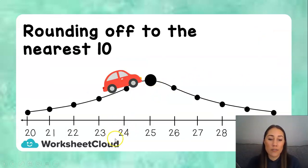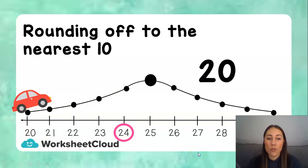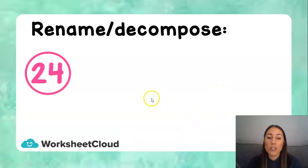Now, we're going to round 24 off to the nearest 10. So, remember my car, if it gets to the top of my hill, I'm on a 4. And I haven't reached the 5 yet, which is the highest part. And the car just rolls all the way back down. So, the 4 in 24 tells me I need to round down to 20. So, rounding off 24 to the nearest 10 is 20. Now, we're going to rename or decompose 24. So, 24 is equal to a 20 plus a 4. Two groups of 10 and 4 units.